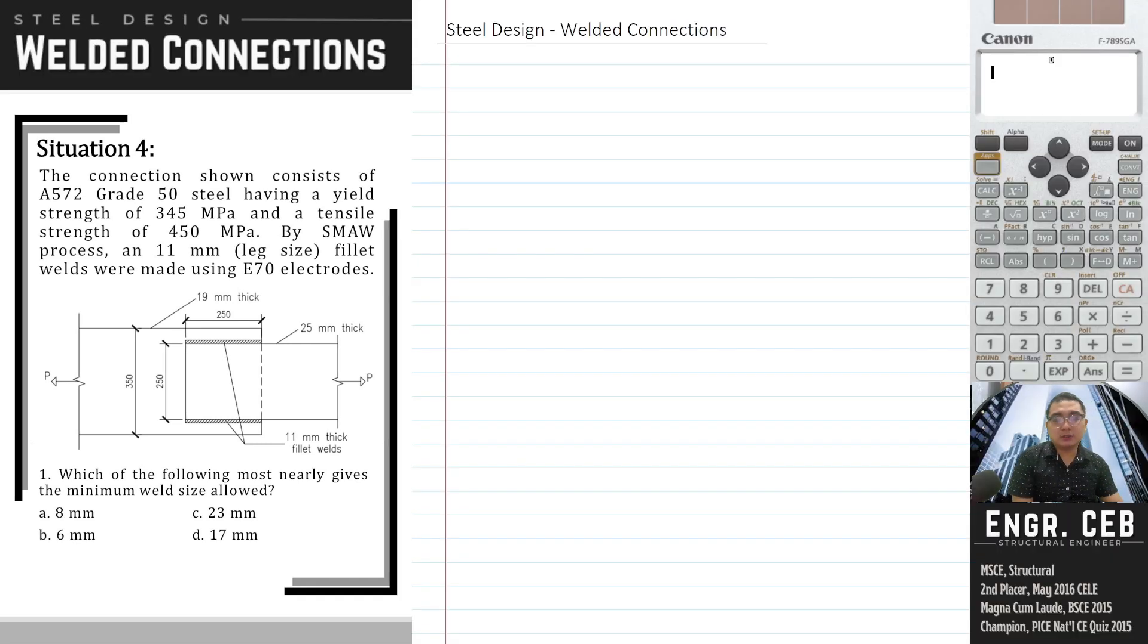We need the table for minimum size of fillet welds. In the figure, we have two plates: one is 25mm thick and one is 19mm thick. The thinner is 19mm, so we will base the weld size on the 19mm thick member.